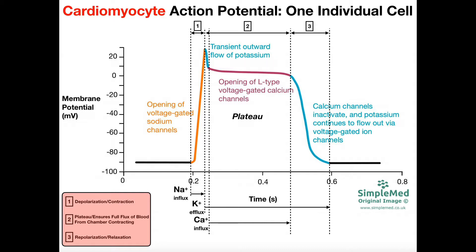A brief recap of the cardiomyocyte action potential: we have an initial depolarization due to the opening of voltage-gated sodium channels. Immediately after reaching about positive 30 millivolts, we have the opening of voltage-gated potassium channels, causing a very brief repolarization. At that point, calcium channels open — specifically L-type voltage-gated calcium channels — and we get this plateau because both calcium and potassium channels are open. For every potassium that effluxes, a calcium influxes, giving us this flat plateau, which ensures the ventricles or atria have time to completely eject blood prior to relaxation. Once that's occurred, voltage-gated calcium channels close while potassium channels remain open, causing repolarization as potassium ions efflux, bringing us back to resting membrane potential.